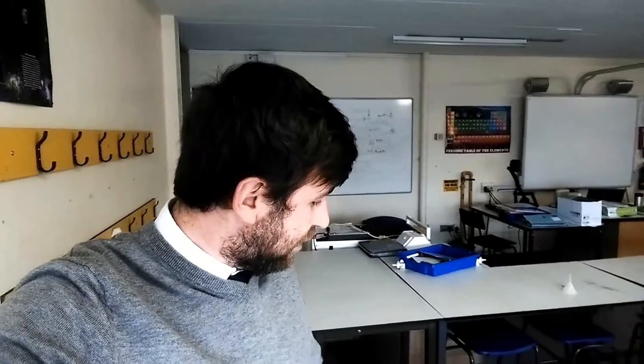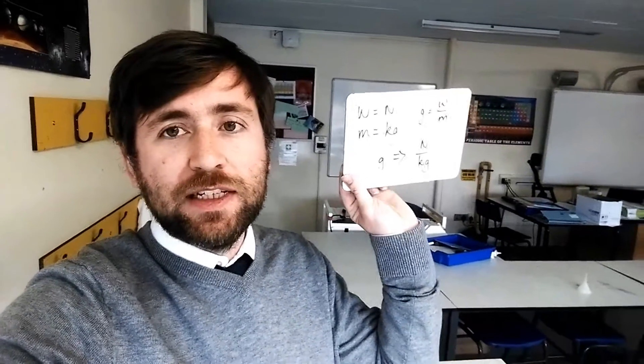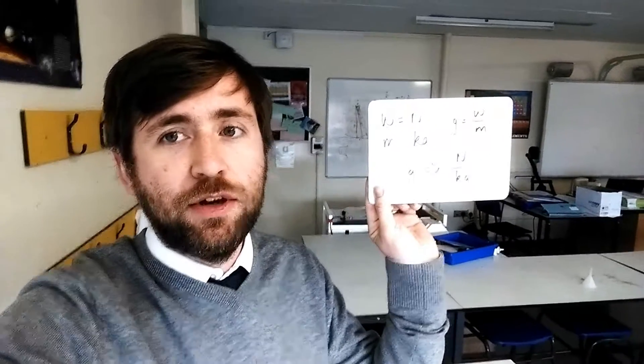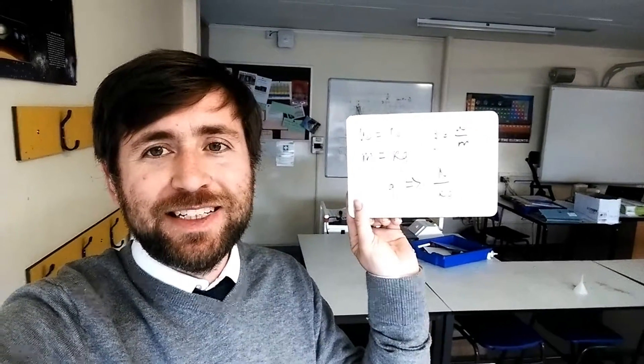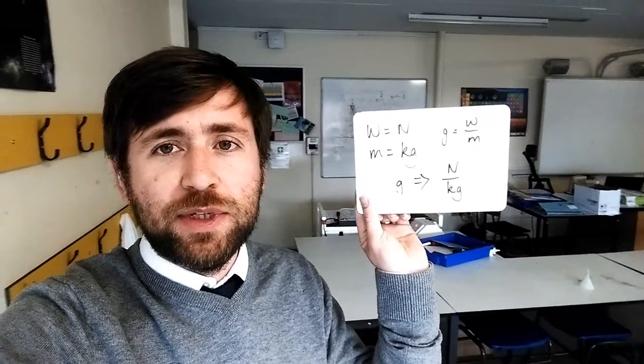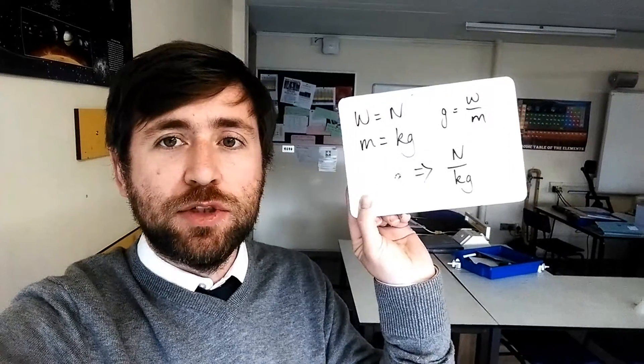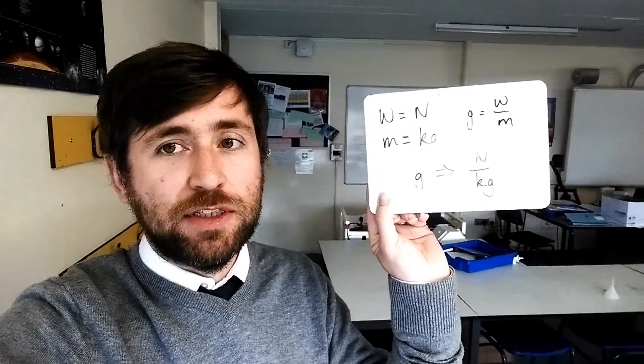Then, after you've done that, you can use what you do know, which is the unit of weight. The unit of weight is a Newton. The unit of mass is a kilogram. Then you can say, well, g (little g) is going to be w over m, so it's going to be a Newton over a kilogram. It's going to be Newtons per kilogram. Hopefully you can see what I mean there.